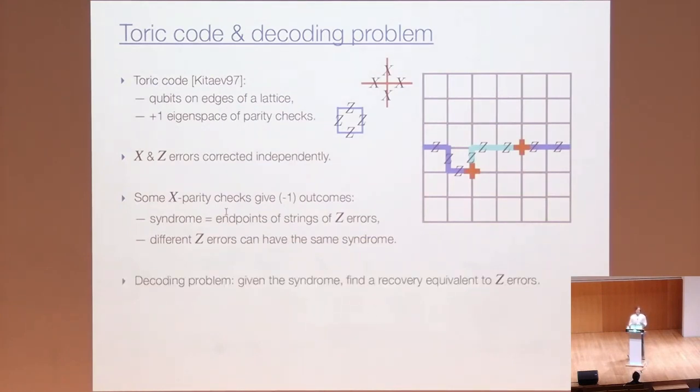Different Z errors can give you the same signature, the same error syndrome. For instance, the light blue error and the dark blue error give you the same syndrome and they happen to be equivalent. However, there could be errors that have the same syndrome, yet they are not equivalent. They would form non-contractable loops. Now I can succinctly define the decoding problem for the Toric code. Given the observed syndrome, we want to find a recovery operator that is equivalent to Z errors that happen in the system.